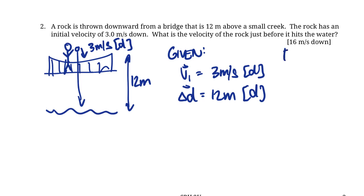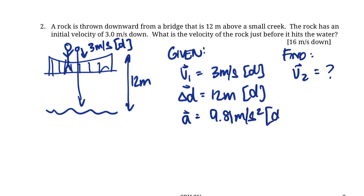We want to know what the velocity of the rock was just before it hits the water — what's the velocity at the end of its 12 meters of travel. Let's write out our givens: initial velocity is 3 meters per second down, displacement delta D is 12 meters down. We only have two known values, so we need a third. The assumption we can make is that this is taking place on Earth, so the acceleration is 9.81 meters per second squared down. Notice all these directions are down, so we won't have to do any sign-switching — this makes it quite easy.